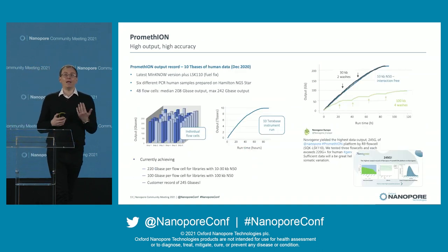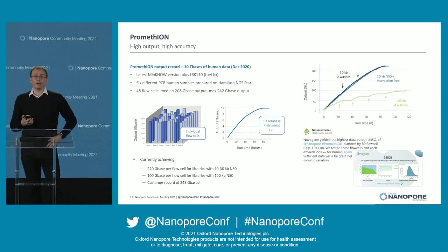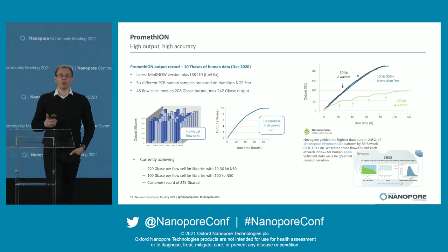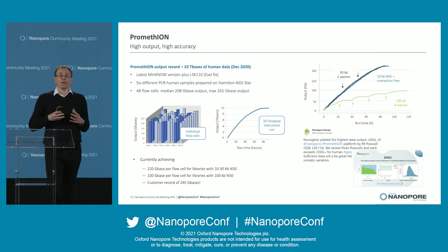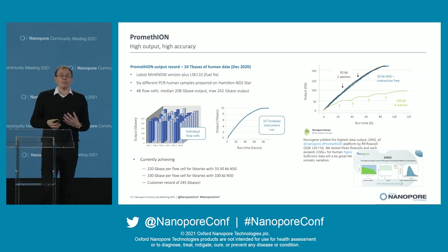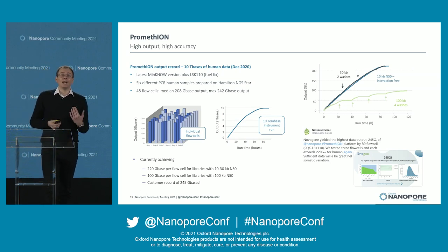Promethium is an incredibly high output device. We showed an amazing 10 terabases of data from a single Promethium run — six human samples run over a number of days, fully loaded Promethium with 48 flow cells. Median output per flow cell was 208 gigabases and our best was 242 gigabases. An amazing amount of data from a single instrument run.